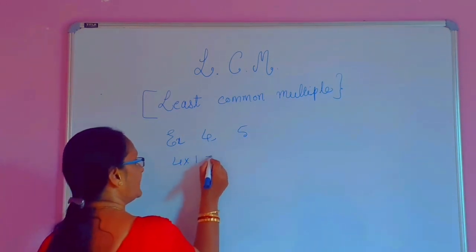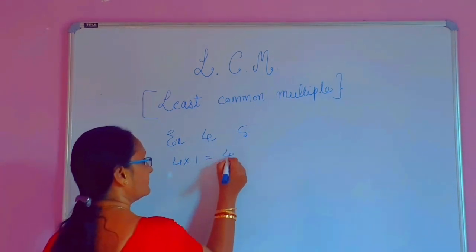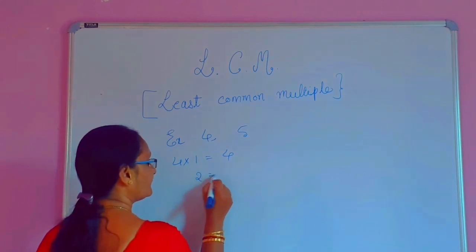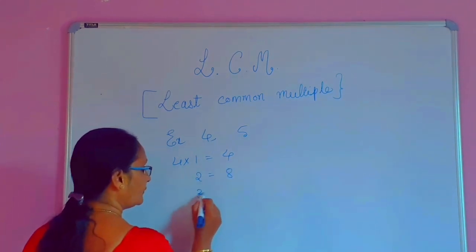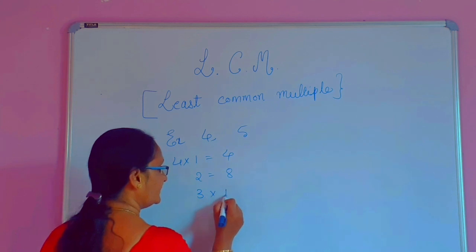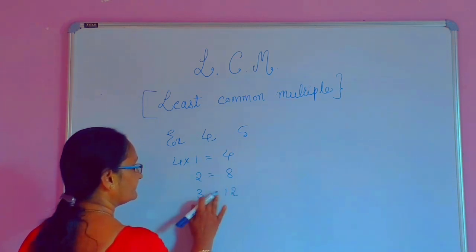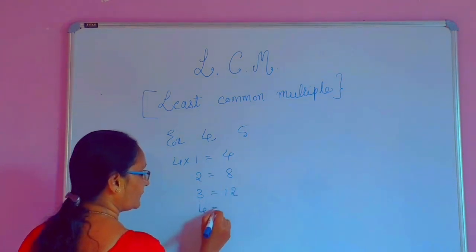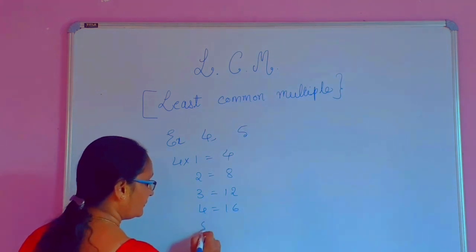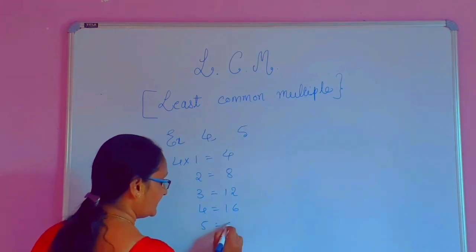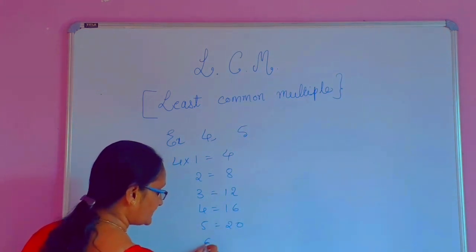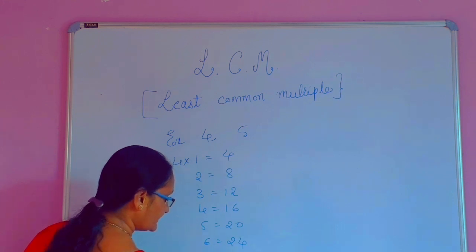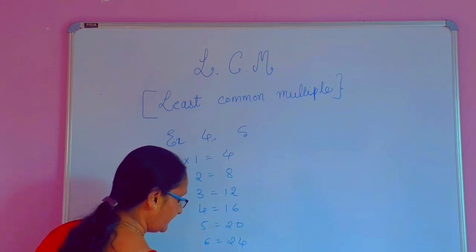4 into 1 is 4. 4 into 2 is 8. 4 into 3 is 12. 4 fours are 16. 4 fives are 20. 4 sixes are 24. 4 sevens are 28.